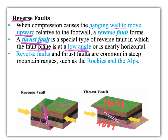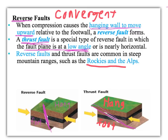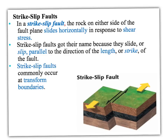We see reverse faults and thrust faults more at colliding boundaries — convergent boundaries. The Rockies and the Alps are examples of mountains that have a lot of reverse faults and thrust faults in them, and they tend to be very steep, jagged-looking mountain ranges. The third type of fault is probably the one you think of the most, and that's a strike-slip fault.